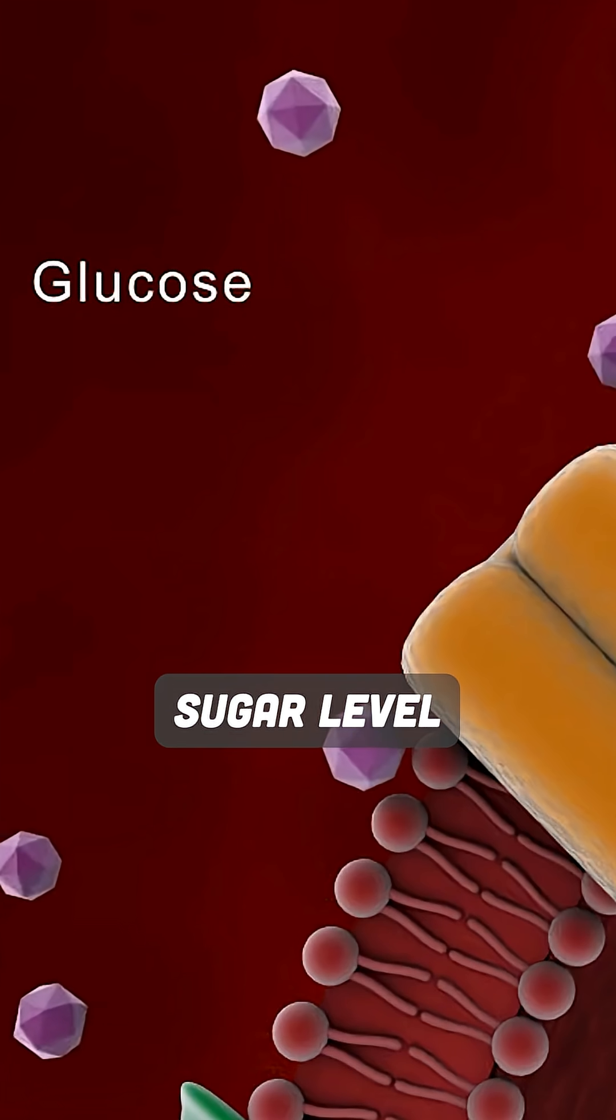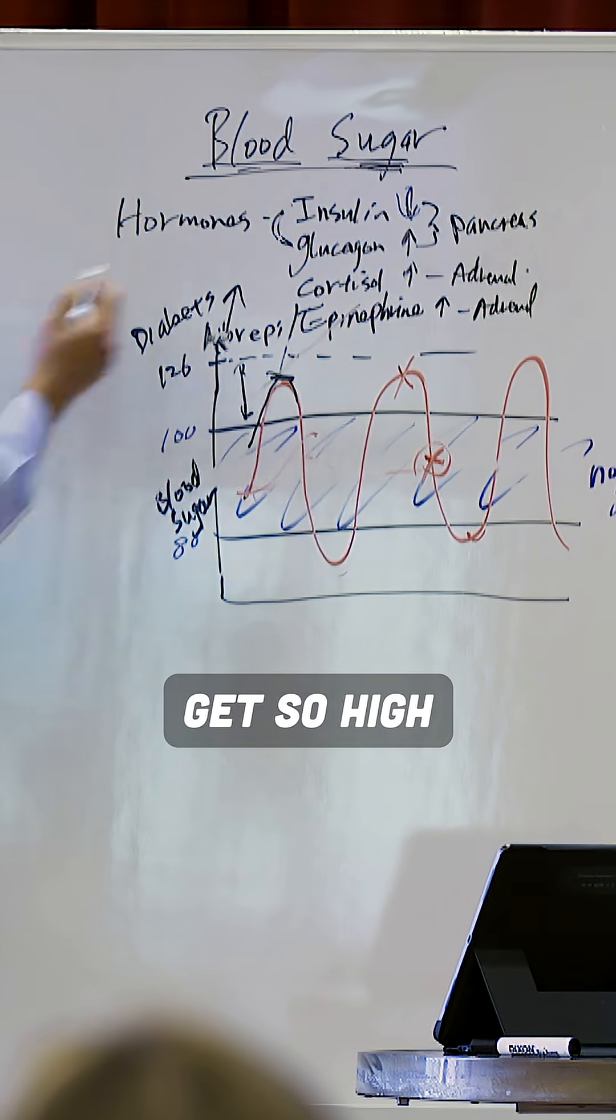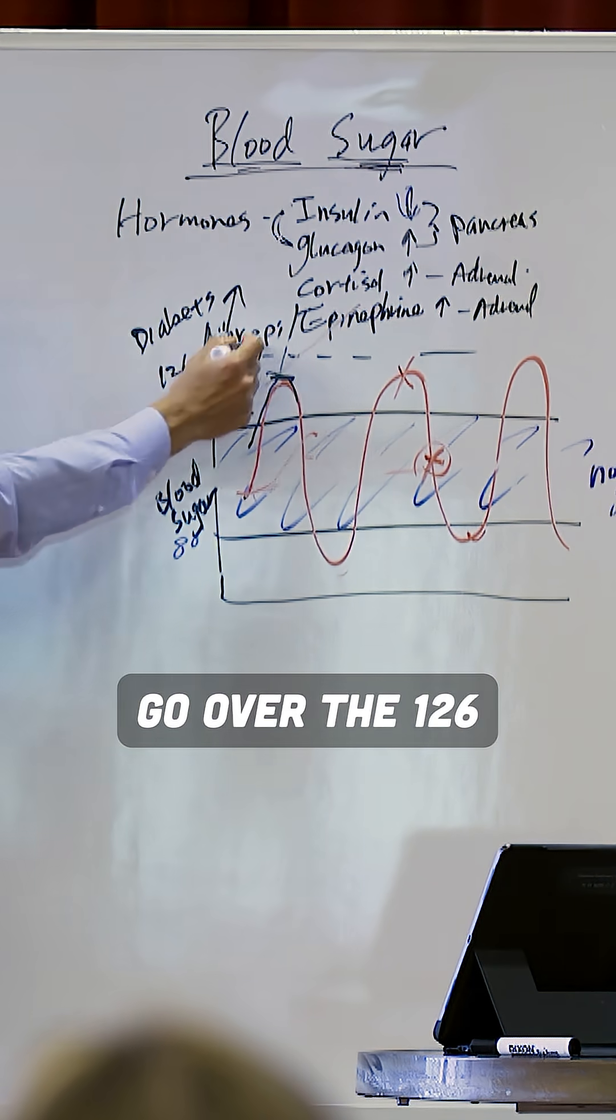What happens to your blood sugar level? It goes up. So this is where you get high blood sugar, and people get it so high they become diabetic because they go over 126.